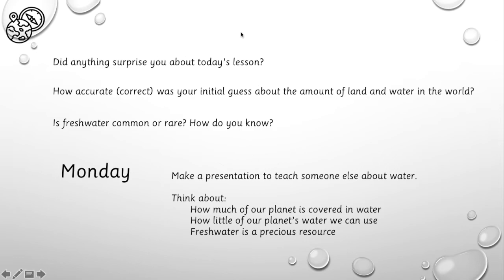Now, to cap up today's lesson, I have a few questions for you, and I hope you will respond and post your lessons on ClassDojo. First, did anything surprise you about today's lesson? I know personally, I was a bit surprised about the fraction of water that is available to living things as compared to the amount of water in the entire Earth. Second, how accurate or correct or right was your initial guess about the amount of land and water in the world? If you weren't correct, that's okay. Mistakes are how we learn. Third, is freshwater common or rare or scarce? How do you know? Please answer these three questions and upload your answers to ClassDojo.